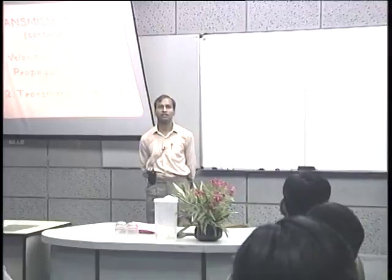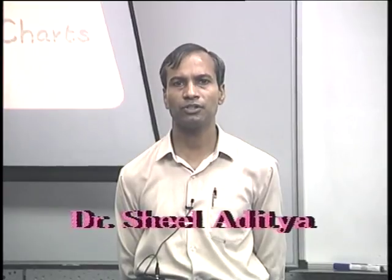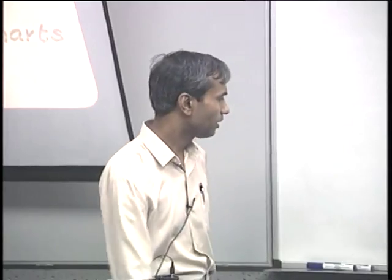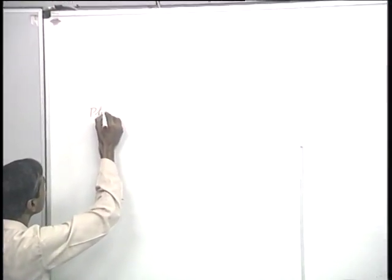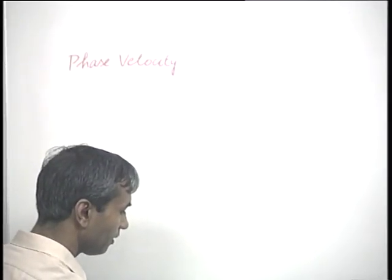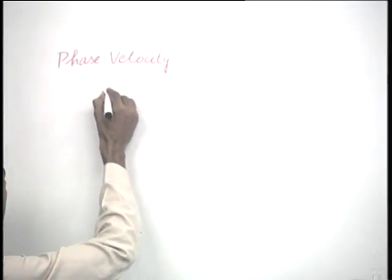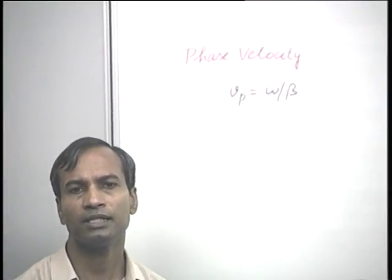Welcome to the 8th lecture in the course Engineering Electromagnetics. As you can see on the overhead projector, the topics for discussion today are velocities of wave propagation and transmission line charts. Taking up the first topic, we introduced last time the concept of phase velocity and obtained an expression: Vp equals omega by beta, with omega and beta having their standard meanings.